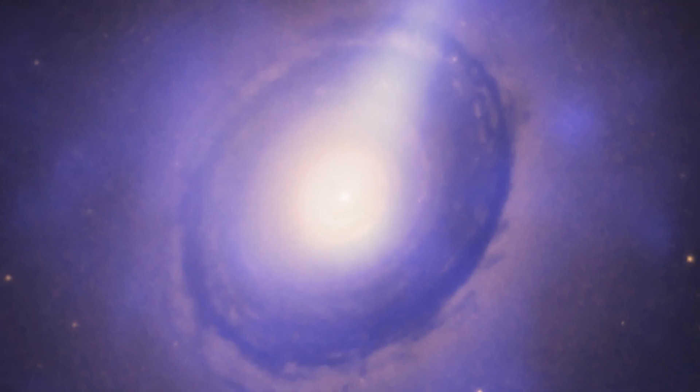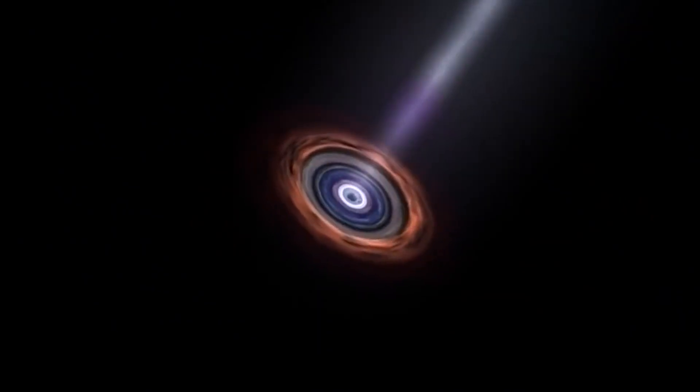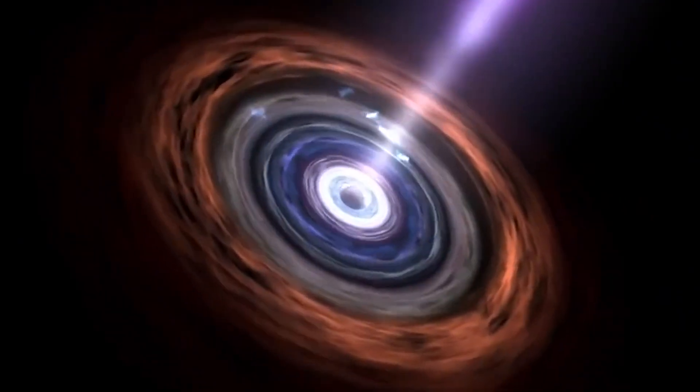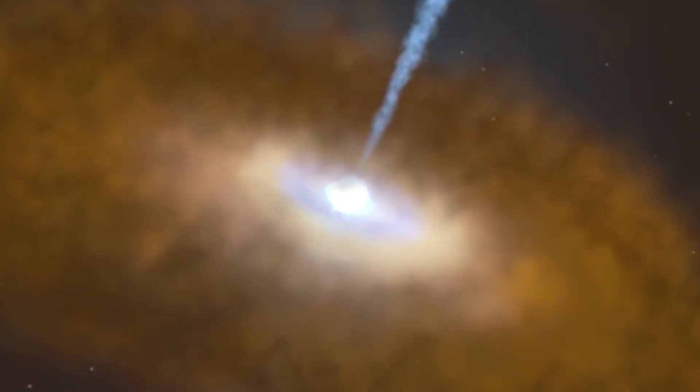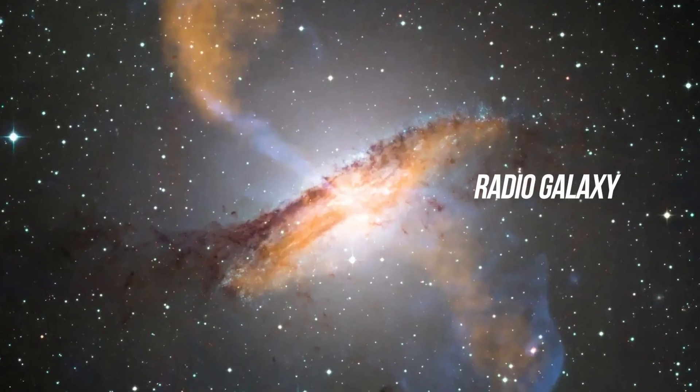But in the case of a galaxy called 3C31, the upper jet is slightly angled toward our planet, making both jets visible, resulting in a cosmic light show. This is known as a radio galaxy.